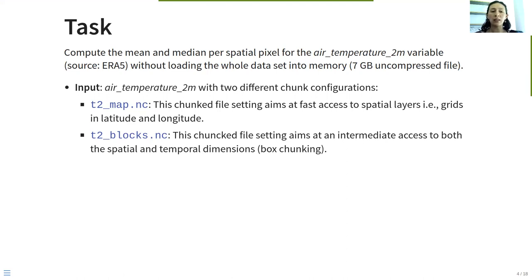The first file we call the map chunking, and it aims at fast access to spatial layers. This is the most used way of storing spatial temporal gridded datasets. The second file, the box chunking, aims at intermediate access to both the spatial and temporal dimension.